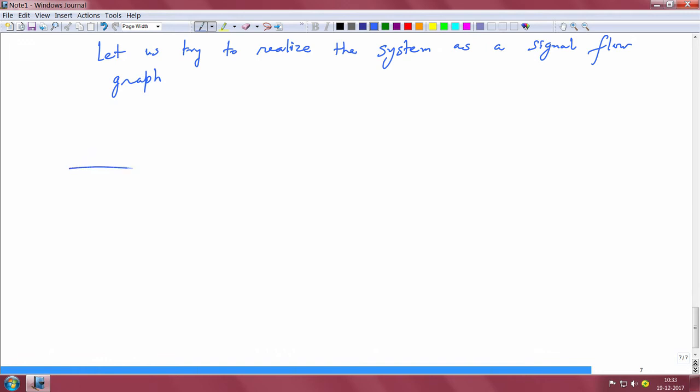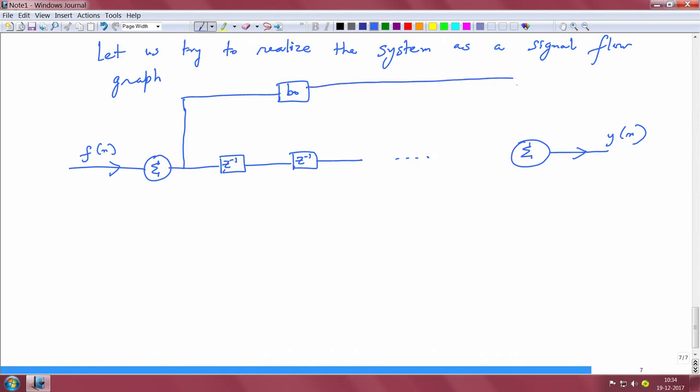How do we get this graph? We have various tab delays. We have a forcing function f(n) at this point. It is scaled by b_0 and gets to the output.